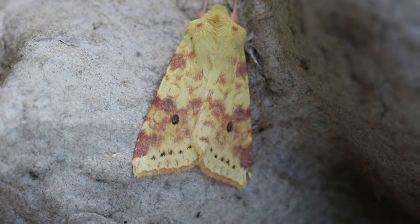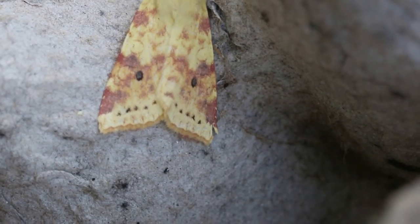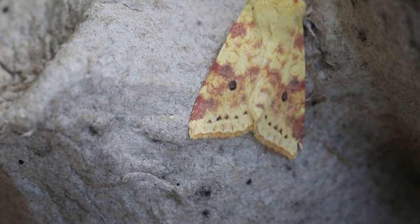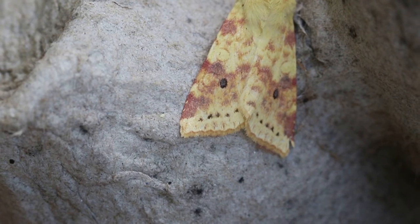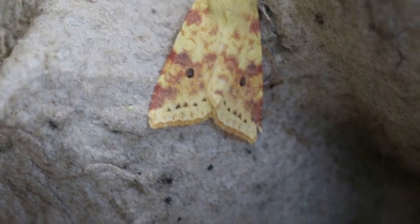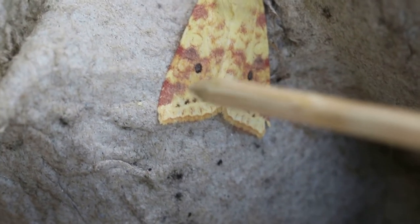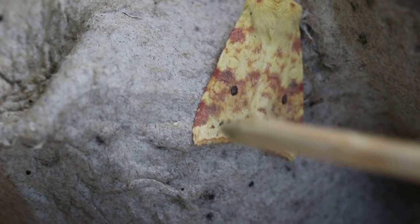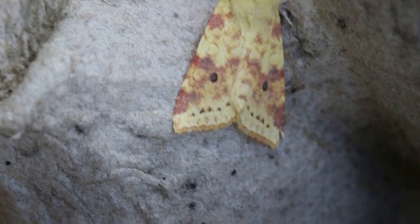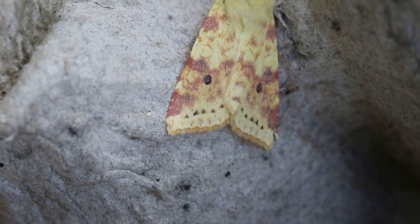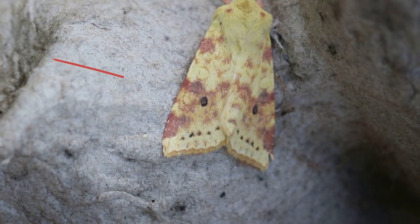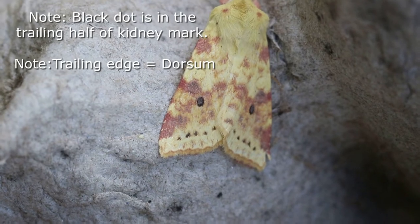Now this is a sallow moth — notice here that the forewing is slightly hooked. These are things you should be looking at. You'll also notice the brown patch on the costa, and the row of black dots towards the termen. So if that was referenced in the moth book, the black centre dot I would say is around about two thirds down.